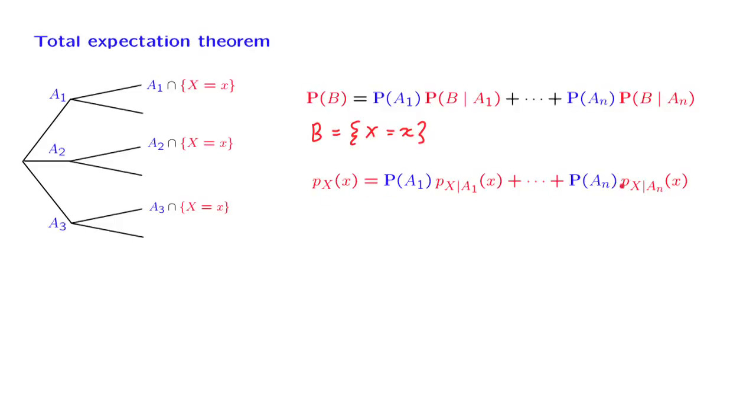Now, this version of the total probability theorem, of course, is true for all values of little x. This means that we can now multiply both sides of this equation by x, and then sum over all possible choices of x to obtain the expected value of the random variable X.